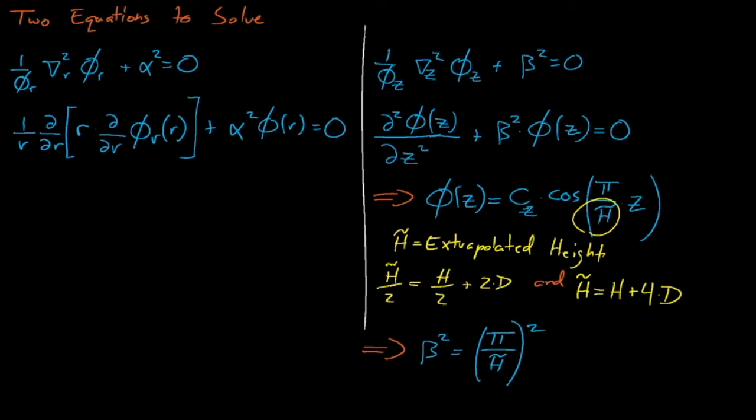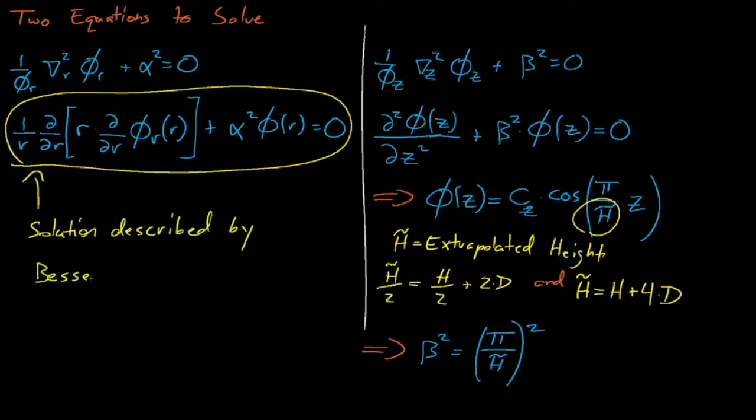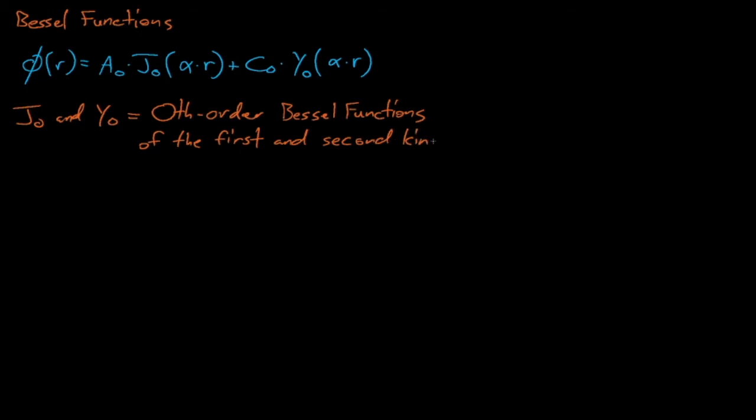Things are a little trickier for the radial differential equation. Turns out that the solution to this differential equation is the combination of these J0 and Y0 terms, where J0 and Y0 are the zeroth order Bessel functions of the first and second kind, respectively. You might not have encountered these Bessel functions before, but they are famous solutions to a differential equation that arises when we try to solve the Helmholtz equation in cylindrical coordinates. A slightly more fun fact about Bessel functions is that they actually describe the modes of vibration that we see when we strike a circular drum with a drumstick.